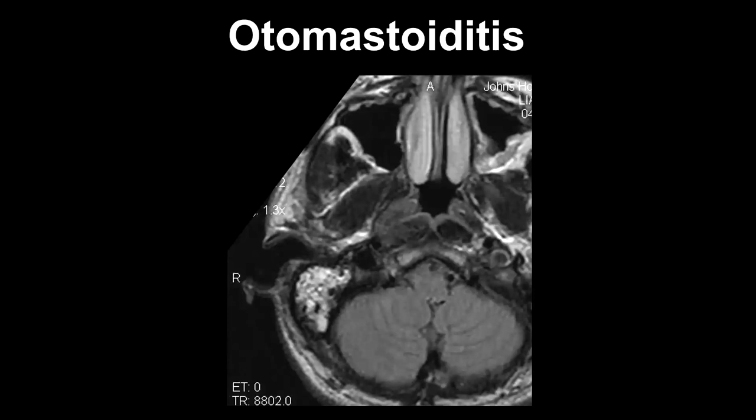Here we have a patient with a FLAIR scan showing high signal intensity in the mastoid air cells. The first point is that it is very unusual for the fluid in the mastoid air cells to be the same signal intensity as that of CSF. Whatever is within the mastoid air cells is not just pure fluid — it is usually inflammatory disease, and that's why you see it as bright in signal intensity on the FLAIR scan.